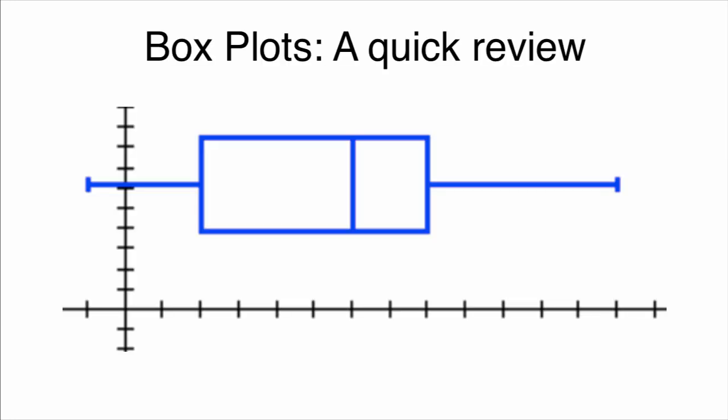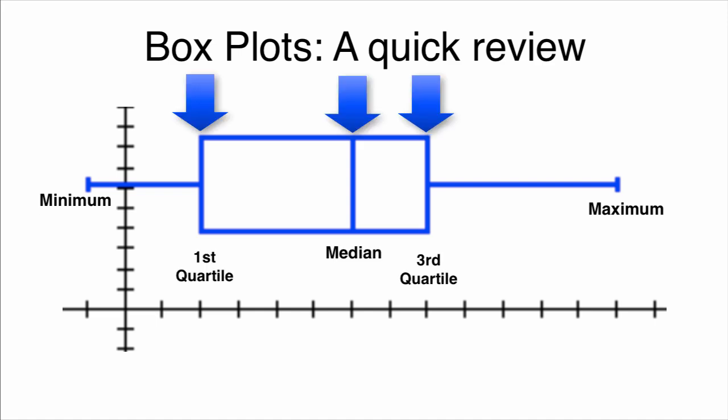First, a quick review. A box plot is a visual way to represent a set of numbers. You get the most out of them when you're viewing two different ones side by side. This is the largest or max value. This is the smallest or minimum value. And inside the box, we have the median, first, and third quartile.